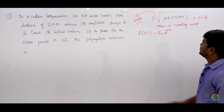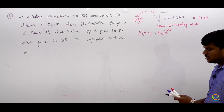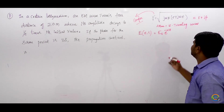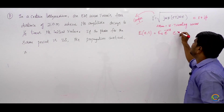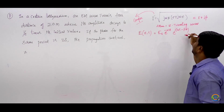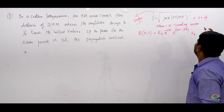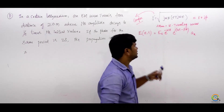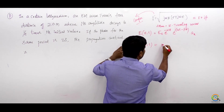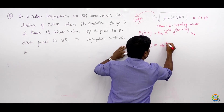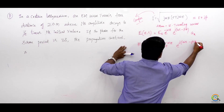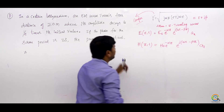By putting this into the EM wave equations, the final EM wave equation will be: E(z,t) = E naught e power minus alpha z, into e power j(omega t minus beta z), directed in A-x. Similarly, you will get the magnetic field: H(z,t) = H naught e power minus alpha z, into e power j(omega t minus beta z), in A-y.